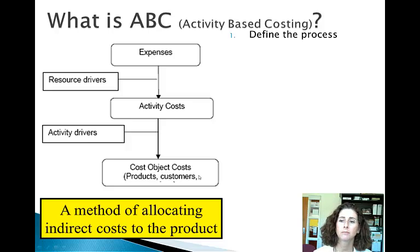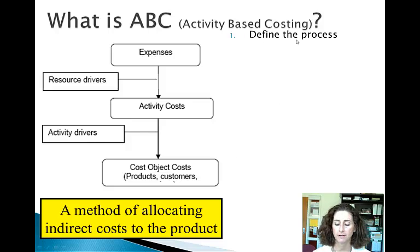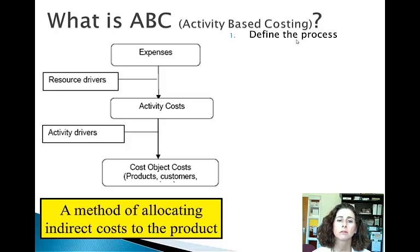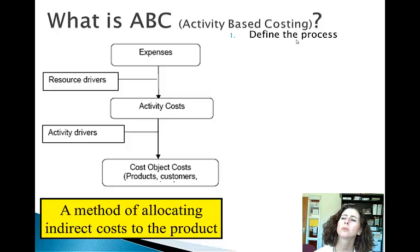We're going to talk through an example of the steps on how to develop activity-based costing. The first step is to define the process. I'm going to use making cakes — a bakery — as an example. So we stir up the batter, bake the cake, let it cool, frost it, decorate it, and give it to the customer. The main activities are baking the cake and frosting the cake.